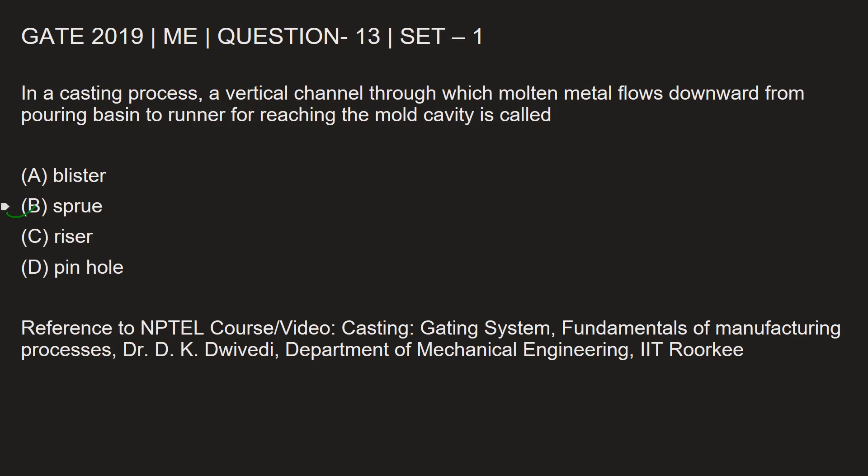Option B, sprue, is the vertical channel in the casting process through which molten metal flows downward from the pouring basin to the runner for reaching the mold cavity.